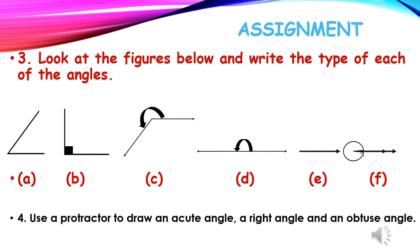Figures are shown A, B, C, D, E, F. You have to write the question, draw the figures using a scale and pencil, and below that write the name of the angle. Similarly, the fourth one: you have to use a protractor to draw an acute angle, a right angle, and then an obtuse angle. You all will try both questions, and I will give you the answers in the next lecture.